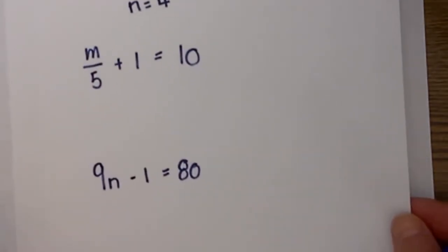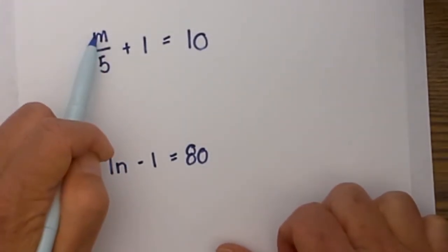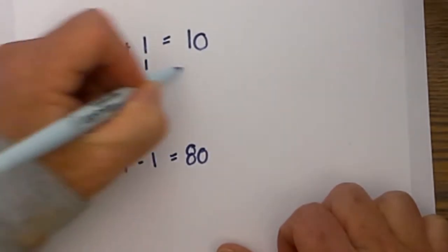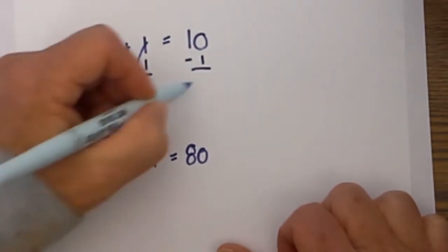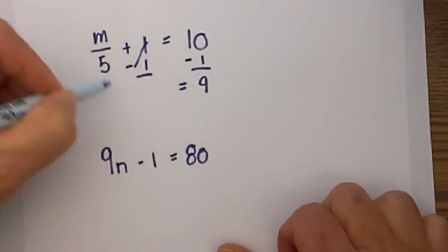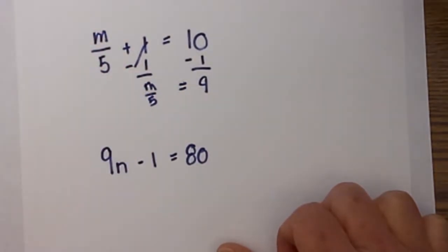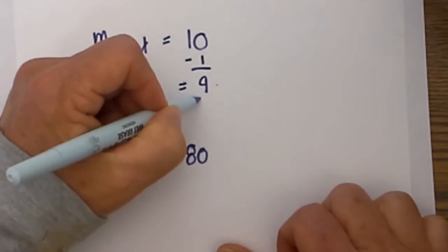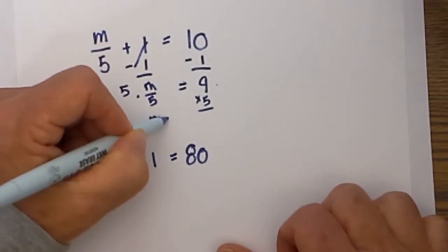Let's go ahead and look at the second one. Step one, we need to try to get the variable by itself, so we will undo this addition with subtraction. We will subtract one from both sides, these cancel, this becomes nine. And now we have a fraction with m on top and five on the bottom. In order to undo this division we will do multiplication, so we will multiply each side by five, and so m equals 45.